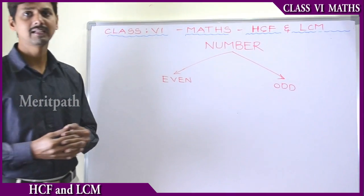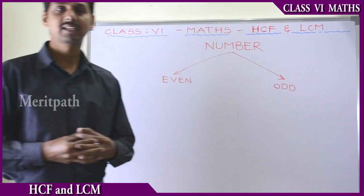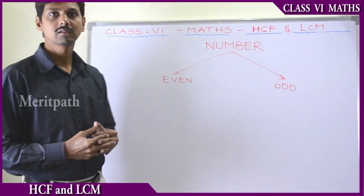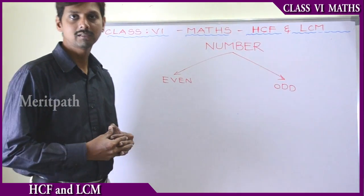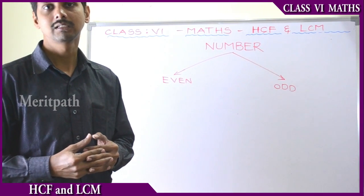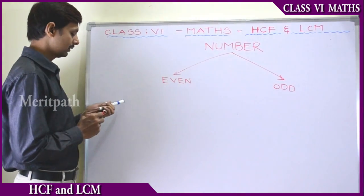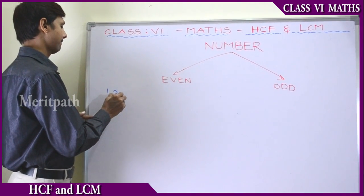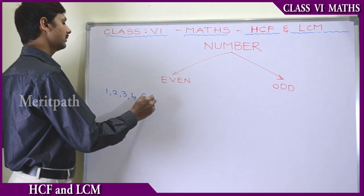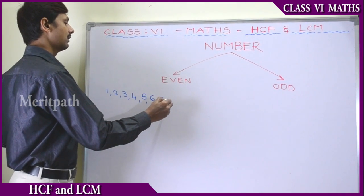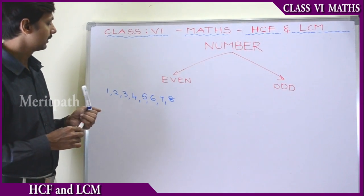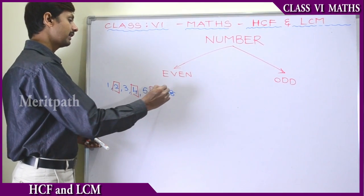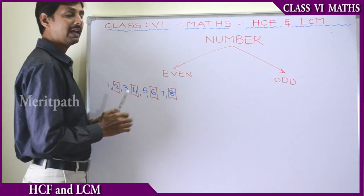Classics Mathematics: HCF and LCM. Before learning HCF and LCM, let's learn about even numbers and odd numbers. We have already learnt some of the divisibility properties in previous classes. We have some numbers which are divisible by 2: 2 is divisible by 2, 4 is divisible by 2, 6 is divisible by 2, 8 is divisible by 2, and so on.